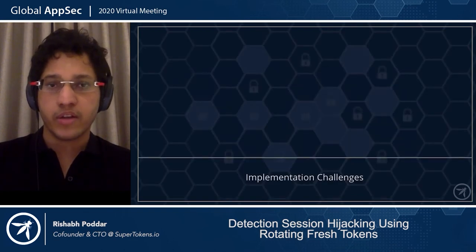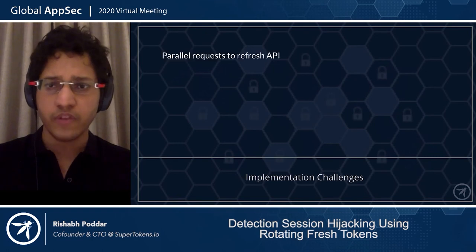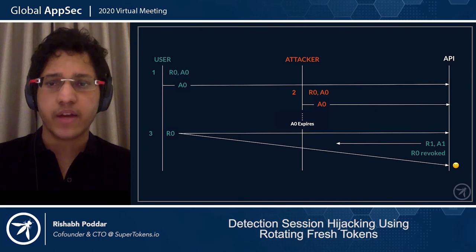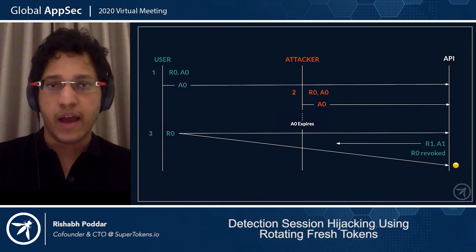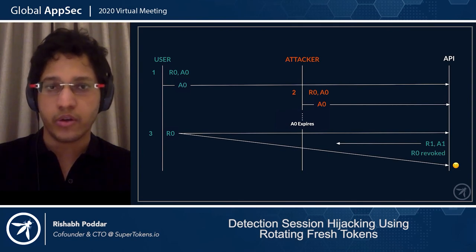When we're talking about implementation, there are essentially three challenges. The first one is parallel requests to the refresh API. If the front end were to issue more than one request to the refresh token endpoint using R0, the first request would revoke R0 and the second would yield a false positive of session theft. This scenario can happen when a user is visiting an app after a long time or after the access token has expired, since apps tend to have many API calls in parallel on app loading.